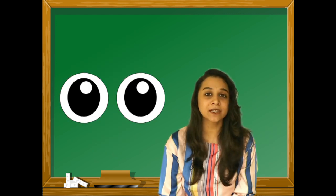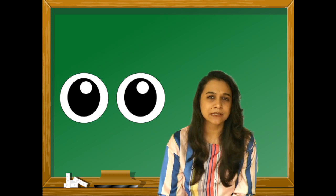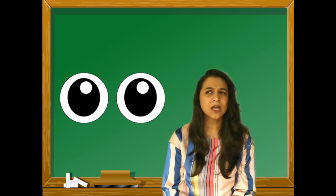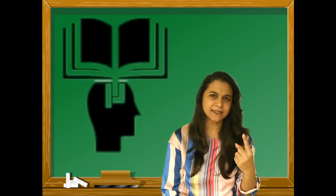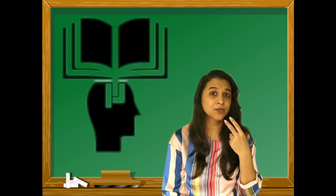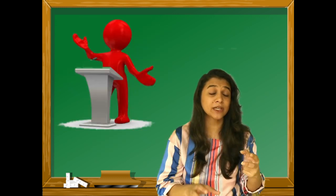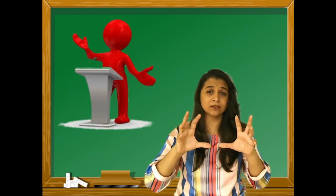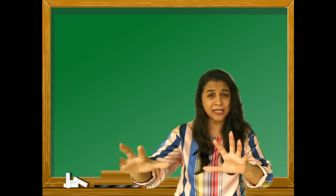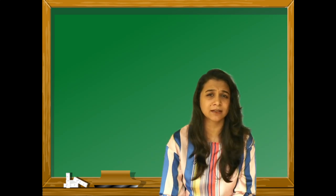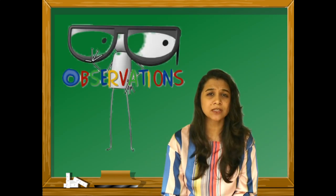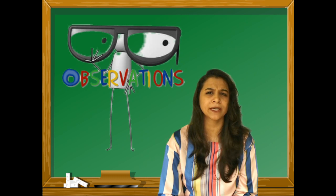Moving on to the characteristics of visual learners. Visual learners are good at memorization. They are good at speech, good on each word, and good at spelling. They are also good at concentration and observation.